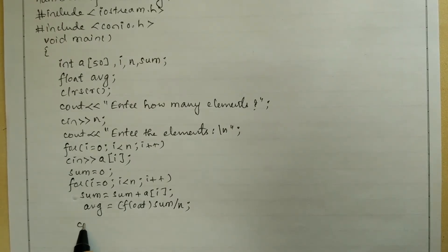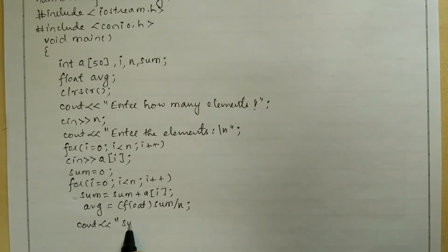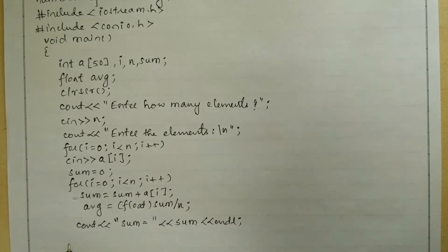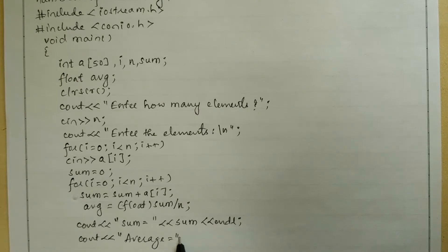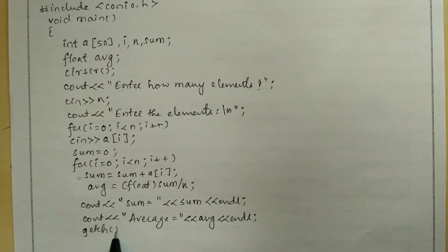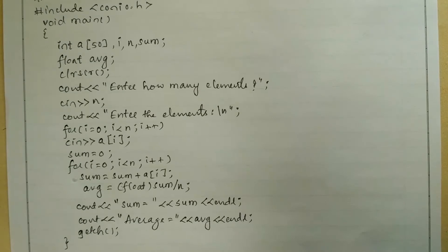Now let us print the value stored in sum and avg. Here I am going to write cout stream insertion operator — in double quotation mark I am going to write 'sum is equal to' — then the variable name sum, and stream insertion operator endl to bring the cursor down to the next line. Next I am going to write cout — 'average is equal to' in double quotation marks — then the variable avg, stream insertion operator endl, and then getch function, followed by the curly closing brace for the main function.